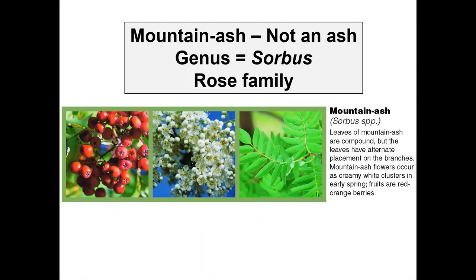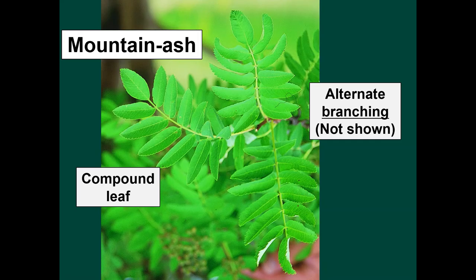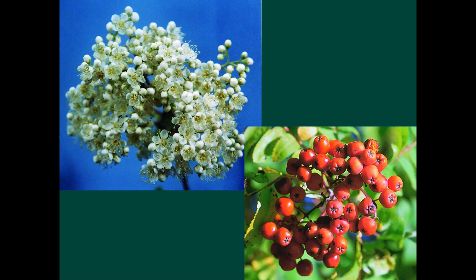One genus commonly confused with ash is mountain ash. Note that the name mountain ash is hyphenated, which tells us these trees are not true ashes. Instead of being in the genus Fraxinus in the olive family like ash trees, mountain ashes are in the genus Sorbus in the rose family. Mountain ash trees have compound leaves similar to true ashes; however, the branch arrangement is alternate, whereas the branch arrangement on true ashes is opposite. The flowers and fruit are also vastly different between mountain ash and true ash.